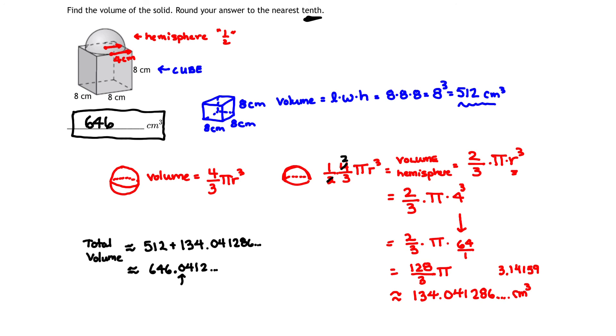Now, summarize, what did we do? We took the volume of the cube on the bottom, and then we took the volume of the hemisphere on top, and we added them together. And that gave us our total of 646 cubic centimeters. I hope this made sense. I hope this helped you out. If you have any questions, don't hesitate to reach out. We'll see you next time.